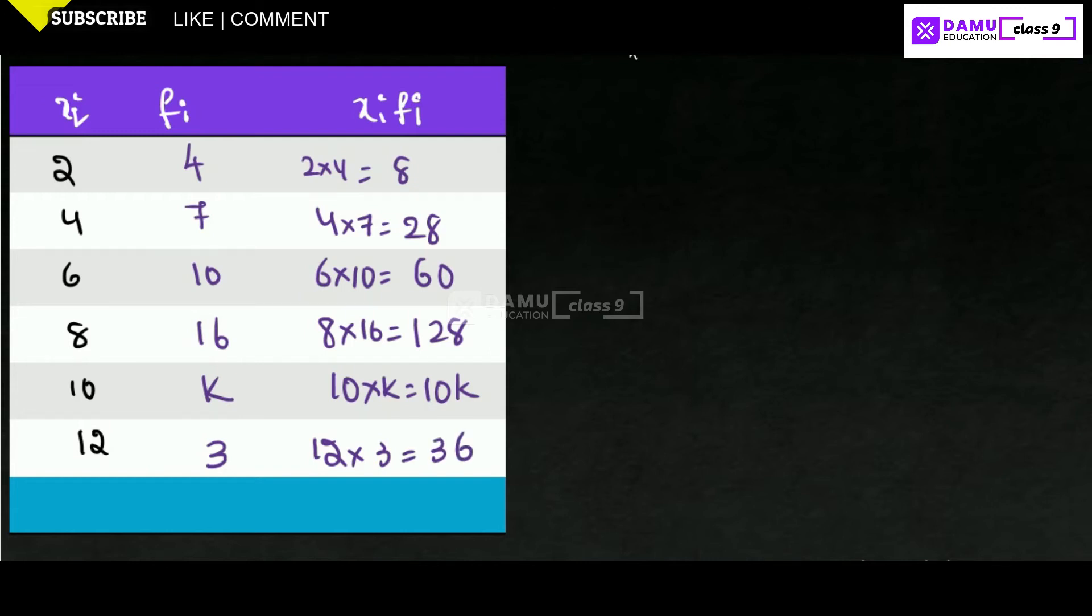Now this value is summation of fi. If you add all these values, summation of fi will be equal to 4 plus 7 plus 10 plus 16 plus k plus 3. 4 plus 7 is 11, 11 plus 10 is 21, 21 plus 16 is 37, 37 plus 3 is 40. So 40 plus k.